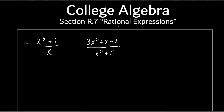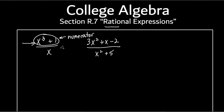Let's talk about the names of things. All the stuff on top of the division bar — because that line means divide — has a special name. Do you remember what that is? A numerator. And the thing on the bottom is called the denominator. You learned this probably in elementary school. You've got the top as the numerator and the bottom as the denominator.